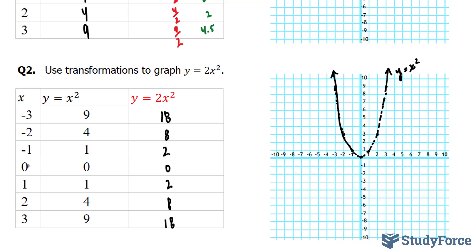So if we graph 0 and 0, that stays the same. I'm going to use red. 1 and 2 is up here. Notice how it happened twice as fast this time. 2 and 8, that's all the way up here. And connecting these, you should end up with something that looks like this.